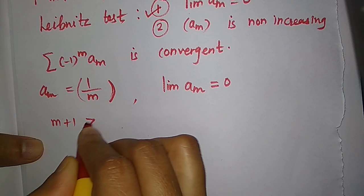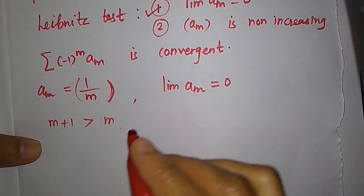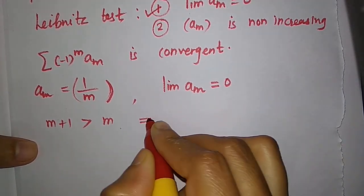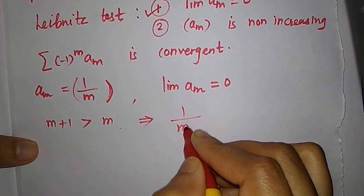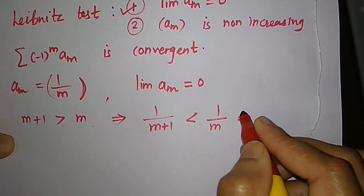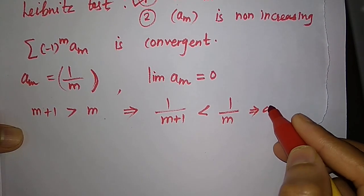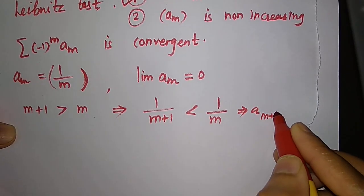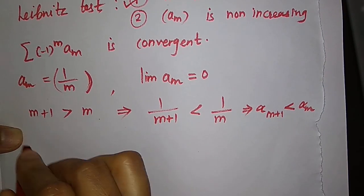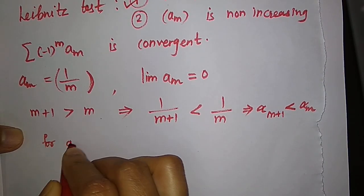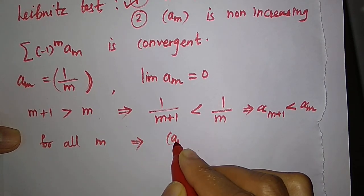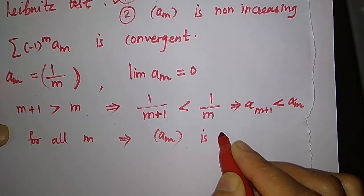For the second condition, we know that m+1 is always greater than m for any natural number m. This implies 1/(m+1) < 1/m, so a_{m+1} < a_m for all m. Hence a_m is non-increasing.